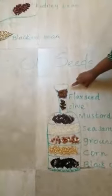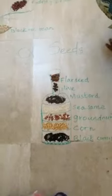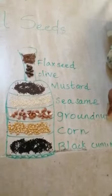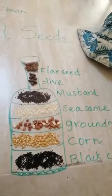Lastly, coming to the oil seeds. Do you know where we get oil from? By grinding the seeds! Let us see the examples: flax seeds, sesame, olive seeds, mustard, sesame, groundnut, corn, and black cumin. From all these seeds we can extract oil.